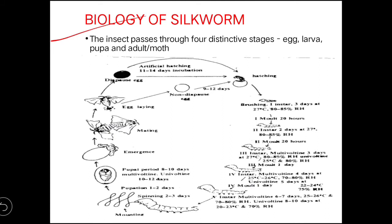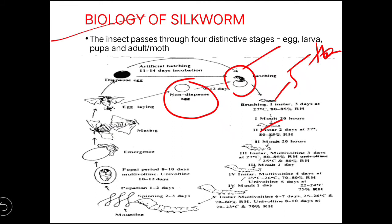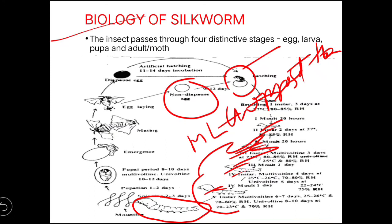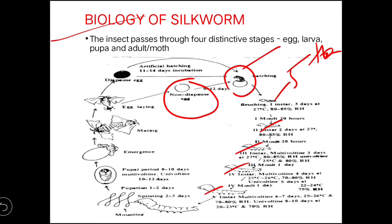In the biology of the silkworm, non-diapausing eggs hatch within 9 to 12 days. There are five larval instars. In the first and second instar, you must provide chopped mulberry leaf as the larvae are very small. For the third, fourth, and fifth instars, whole mulberry leaf is provided. In the fifth instar, feeding decreases as the larva begins spinning.